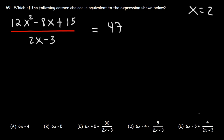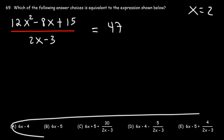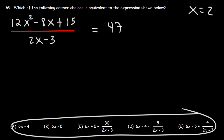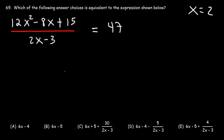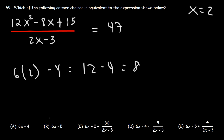Now let's see which answer choice is equal to the same thing. Let's start with A: 6 times 2 minus 4. That's going to be 12 minus 4, which is 8. So that's not 47. We can eliminate answer choice A.